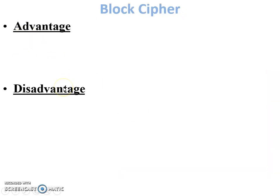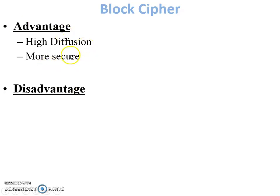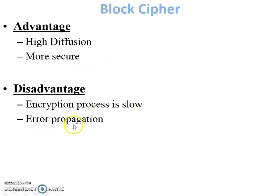Advantages and disadvantages of block cipher. Advantage: high diffusion — because during division of blocks, the location of bits can be changed. It is more secure compared to stream cipher. Disadvantages: the encryption process is slow compared to stream cipher. Also, error propagation — because it uses chaining mode, if there is one error in any cipher text block, the next cipher text block also generates some error, and this continues. So there is error propagation.